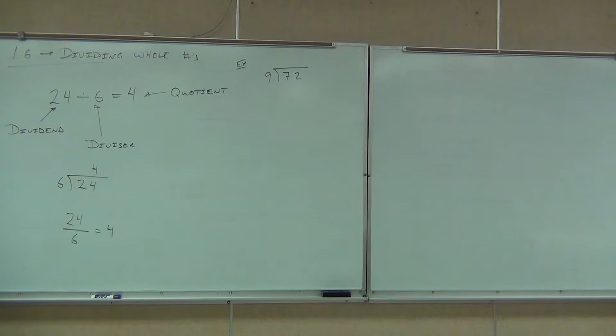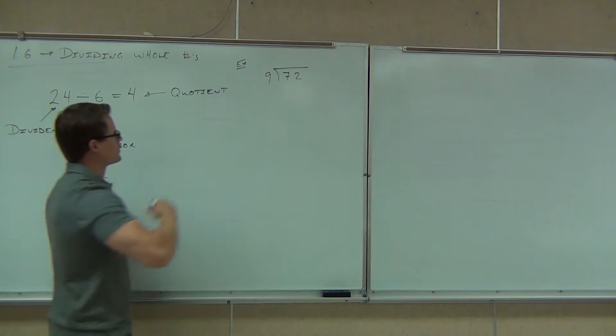72. 72. Good. Name me my divisor. Nine. And what is our quotient here? Eight. Perfect. Great job.